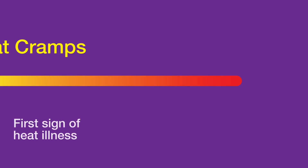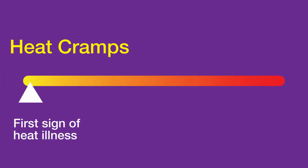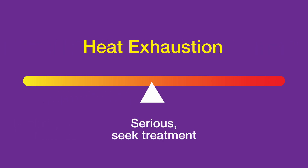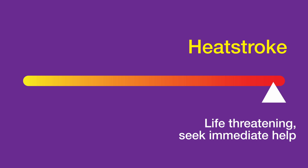Heat-related illness can span a spectrum of different diseases. At the far end it starts with heat cramps, where your muscles cramp from being out in the heat too long. In the middle you have heat exhaustion, where you start to feel worse — maybe some nausea, vomiting, just feel weak all over. Then at the very dangerous, life-threatening end of the spectrum is heat stroke.